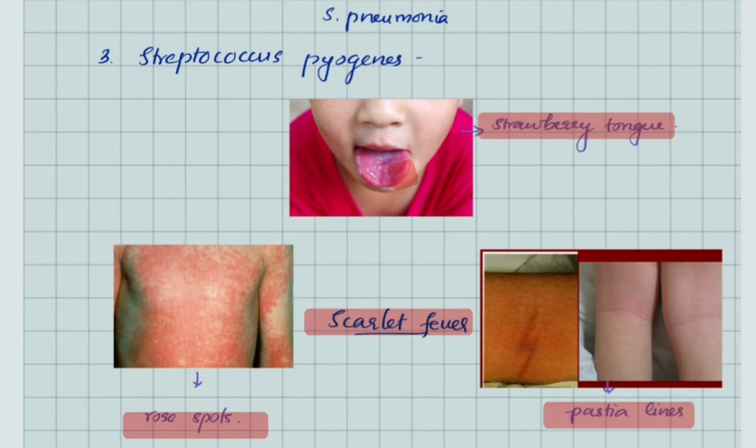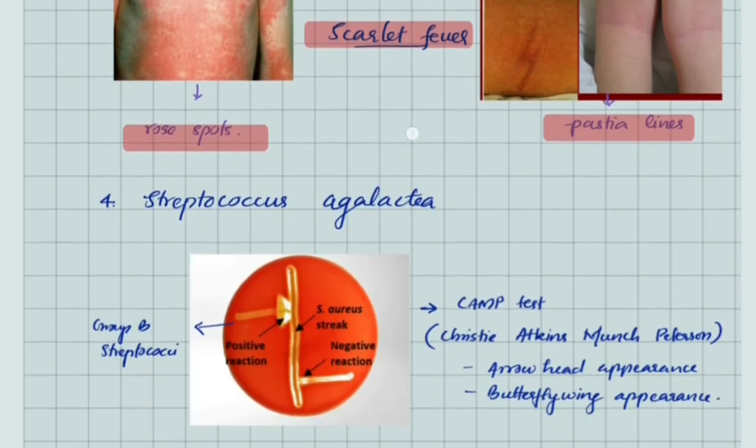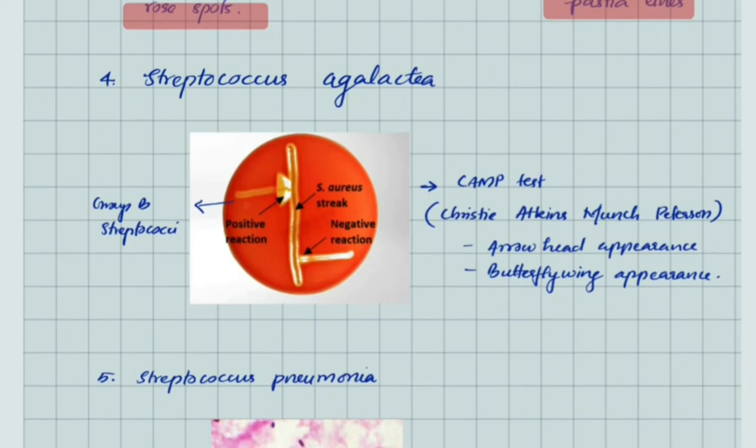Streptococcus agalactiae is Group B Streptococcus that shows a specific test known as CAMP test positive, which shows arrowhead appearance or butterfly wing appearance in blood agar in the presence of Staph aureus streak.